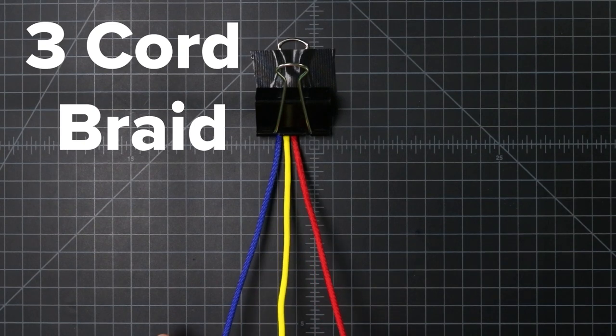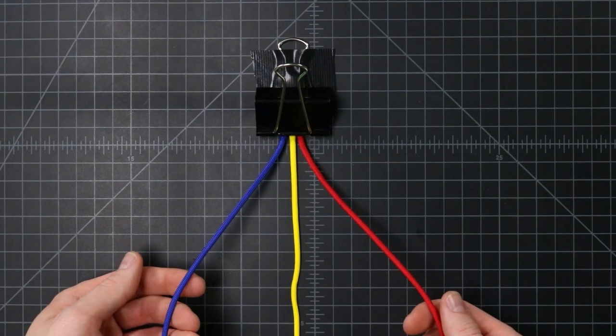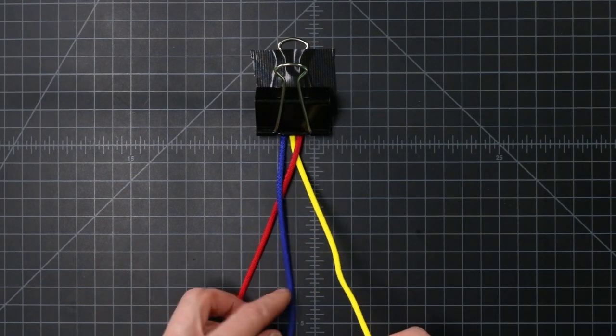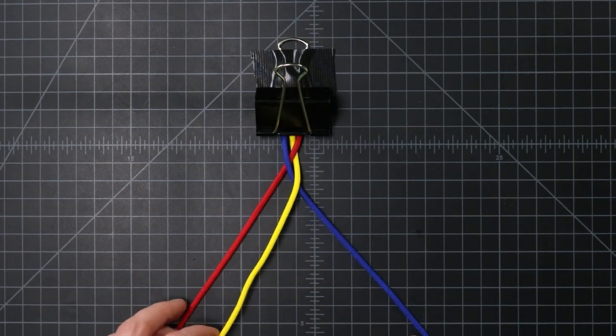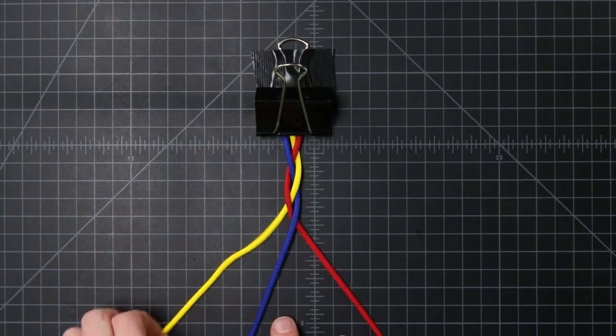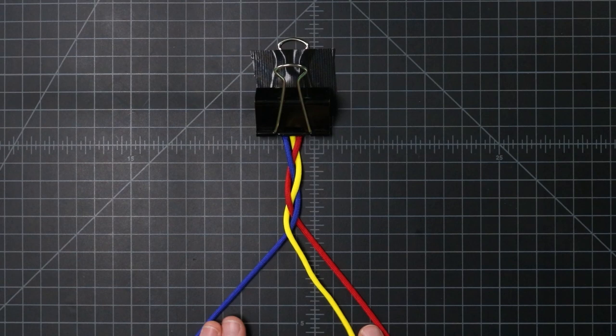Here's a refresher on the standard three cord braid. We just take the outside cords and we alternate left and right, bringing them to the middle. Red cord in, blue cord in, yellow cord in, and that way we alternate between all three colors and get a nice even braid.